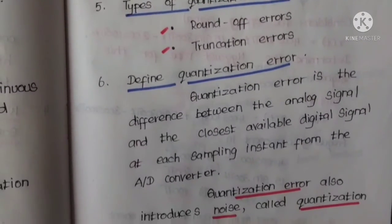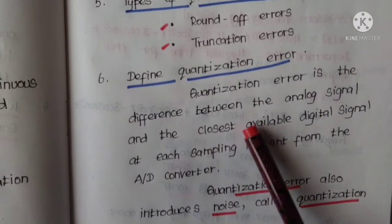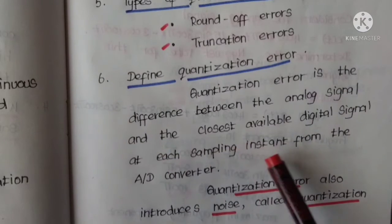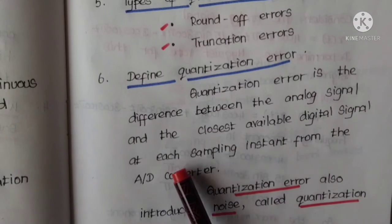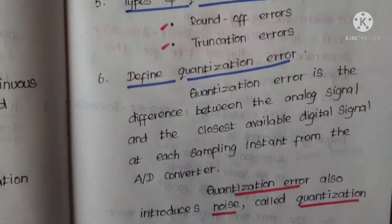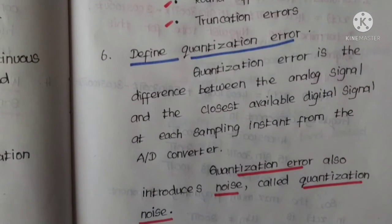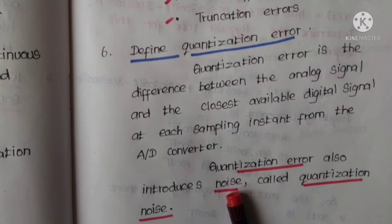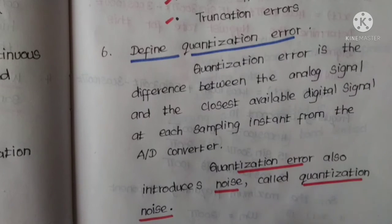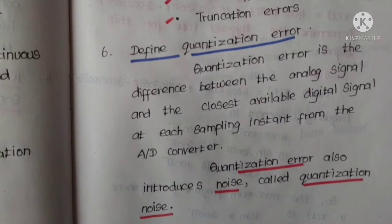So define quantization error. Quantization error is the difference between the analog signal and the closest available digital signal at each sampling instant from the analog to digital converter. Quantization error also introduces noise called quantization noise.